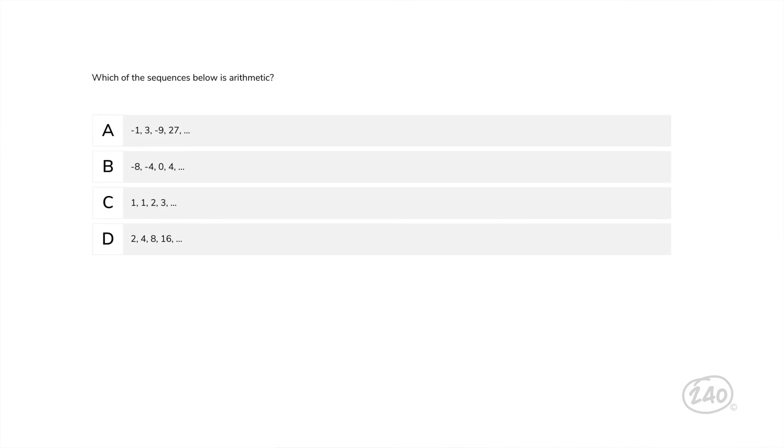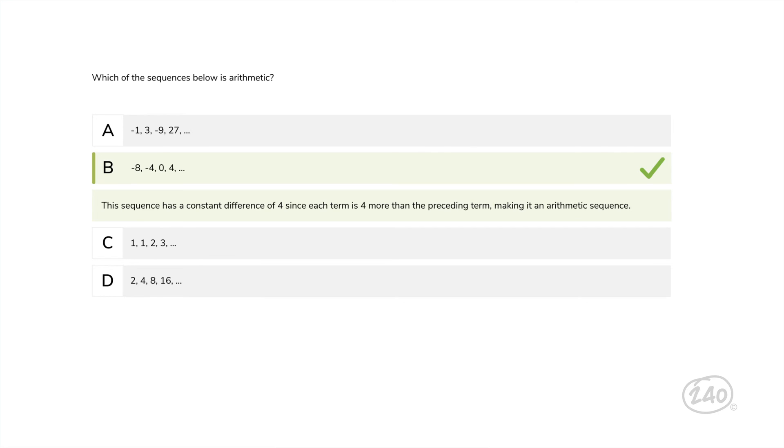Last up, discrete mathematics. Which of the sequences below is arithmetic? An arithmetic sequence is one where the same amount is added or subtracted from each term to the next. The only one here that meets this criteria is B. This sequence has a constant difference of four since each term is four more than the preceding term, making it an arithmetic sequence. Now that's just a taste of practice questions to give you an idea about how these concepts are assessed on the test. Link below for a free, full diagnostic test.